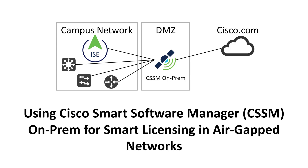Here's another configuration option that I haven't seen on video. I'm going to configure the Cisco Smart Software Manager on-prem device to host our licenses for ISE, then point ISE to this on-prem device for all its licenses on this deployment. This option is made available in version 2.7 patch 4, 3.0 patch 2, and all 3.1 versions.